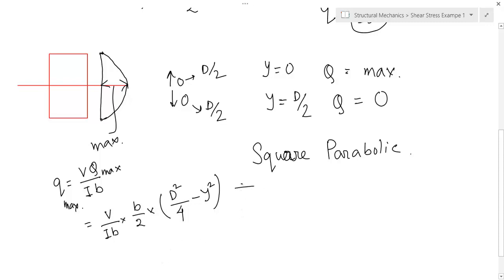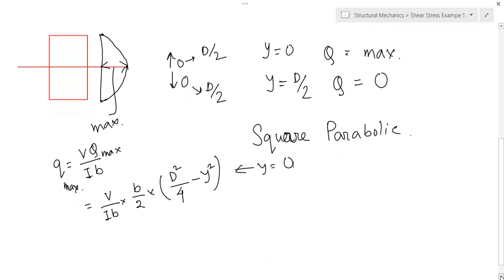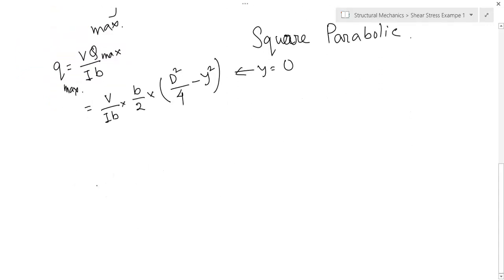b got cancelled. So, let's put y equal to 0. Put y equal to 0. So, you get V by I b into b by 2 into d square by 4. So, b got cancelled.